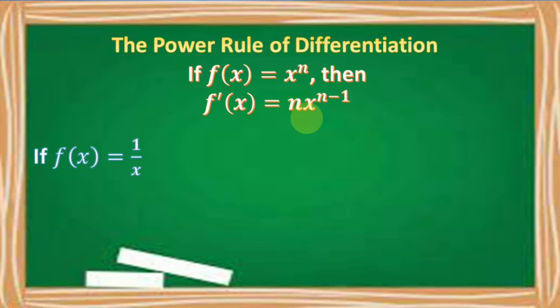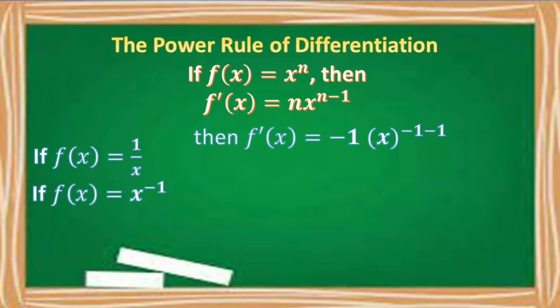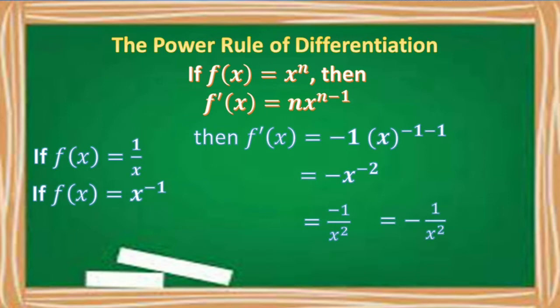If f of x is equal to 1 over x, again this function must be written first in the form x raised to n. So we have f of x is equal to x raised to negative 1. Applying the power rule, f prime of x is equal to negative 1 times x raised to negative 1 minus 1, which is equal to negative x raised to negative 2. Moving x raised to negative 2 to the denominator, we have negative 1 over x squared.